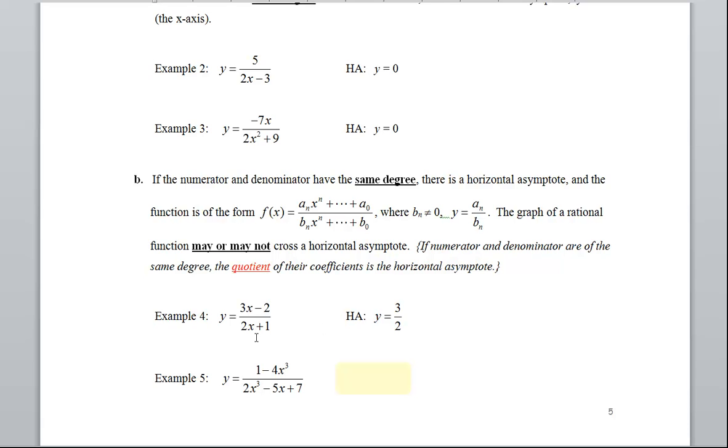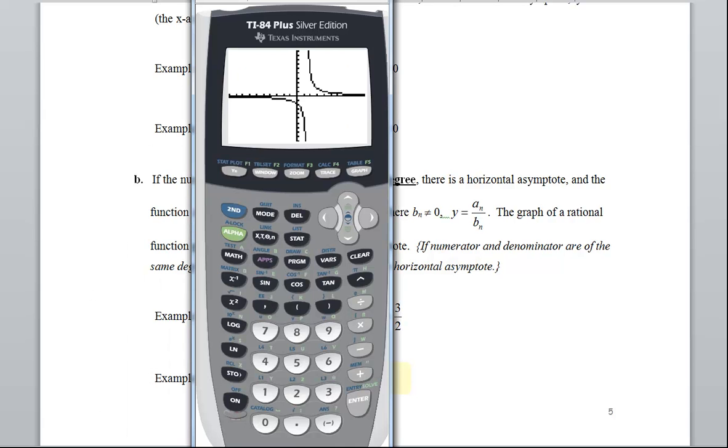Now if I was doing the vertical asymptote, set denominator equal to zero, I would have x equals negative one-half. Let me get my calculator back up. I'll move it over here.